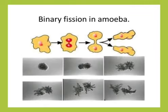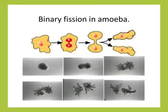The first type is binary fission. You can see on the screen, amoeba is divided into two, producing two daughter cells. The mother amoeba gives rise to daughter cells — an exact copy. This is a type of asexual reproduction.